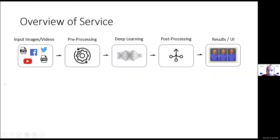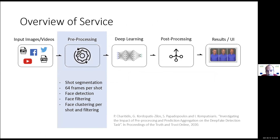Here is how it works under the hood. We take as input images or videos, there is a pre-processing step, the application of a deep learning model, and a post-processing step. In the case of videos, which is the more complicated case, there is quite a lot happening in pre-processing: shot segmentation, many frames per shot used for analysis, a face detection step, face filtering for removing very small faces, face clustering per shot, and filtering based on the clusters.